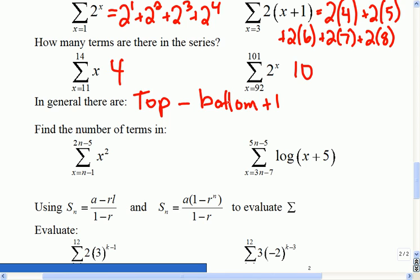So 14 minus 11 is 3, plus one is 4, 101 minus 92 is 9, plus one is 10. That's how many terms there are.